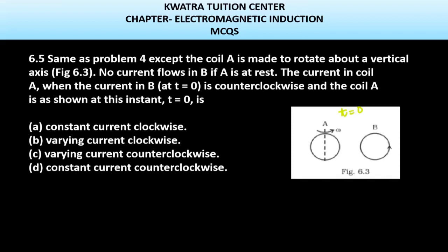They have been saying that the current in B is counterclockwise. So it should be the opposite, which is the clockwise direction. But we need to know if it will be varying or constant.